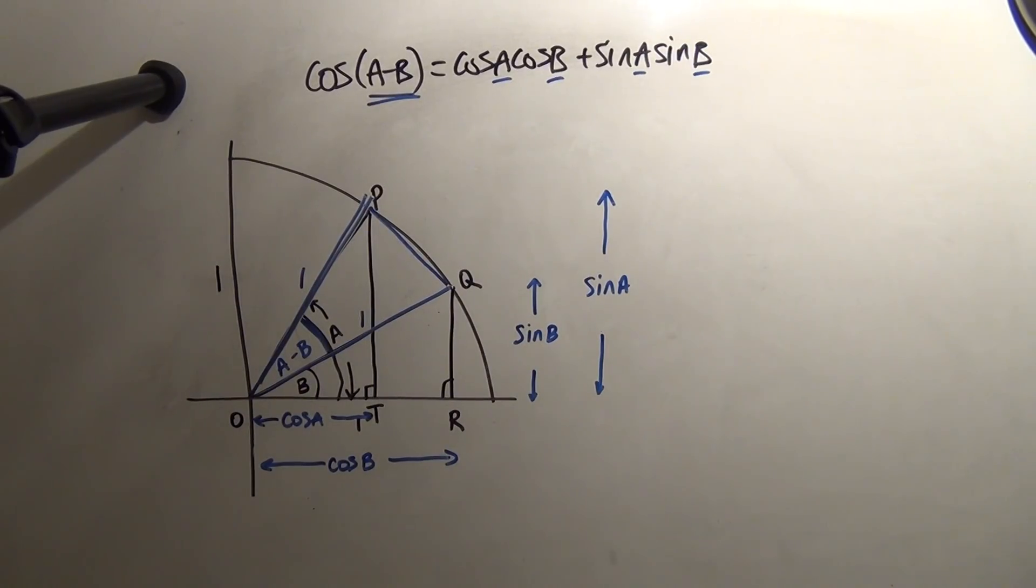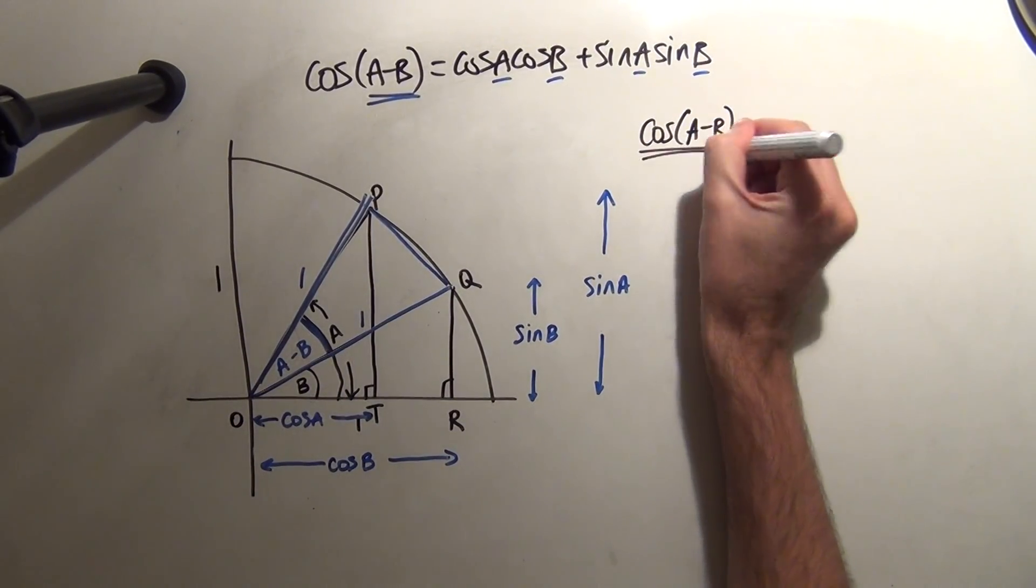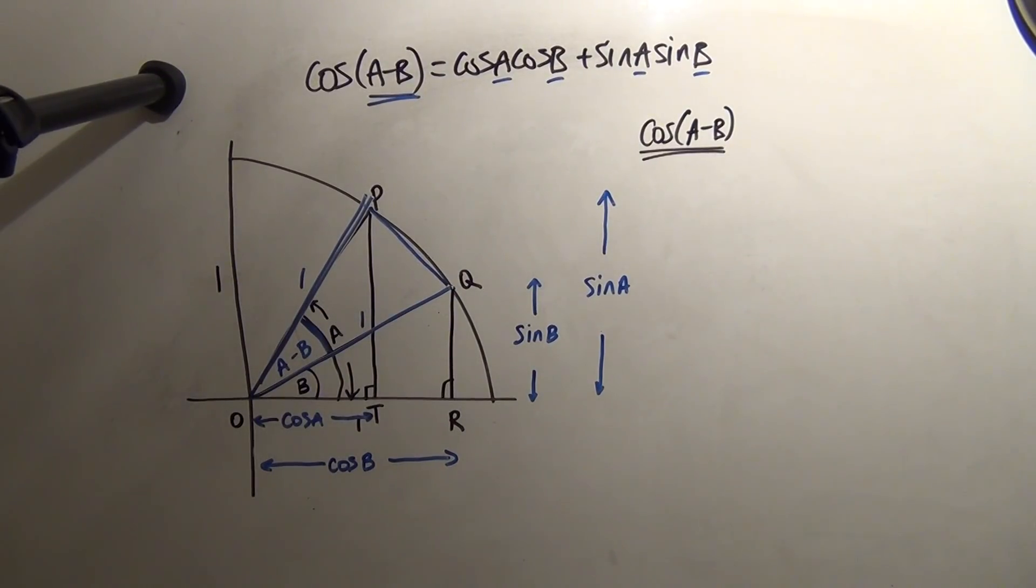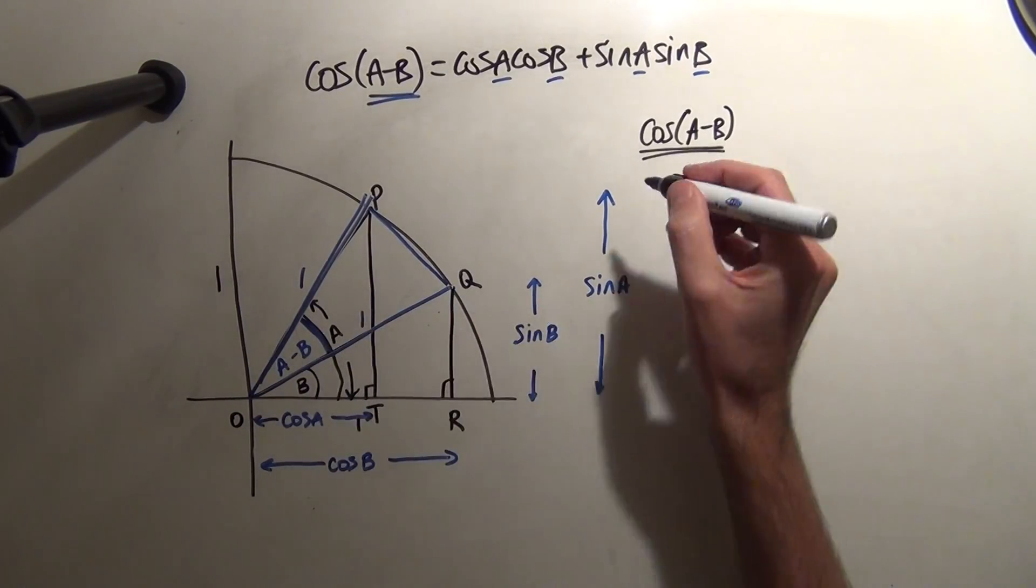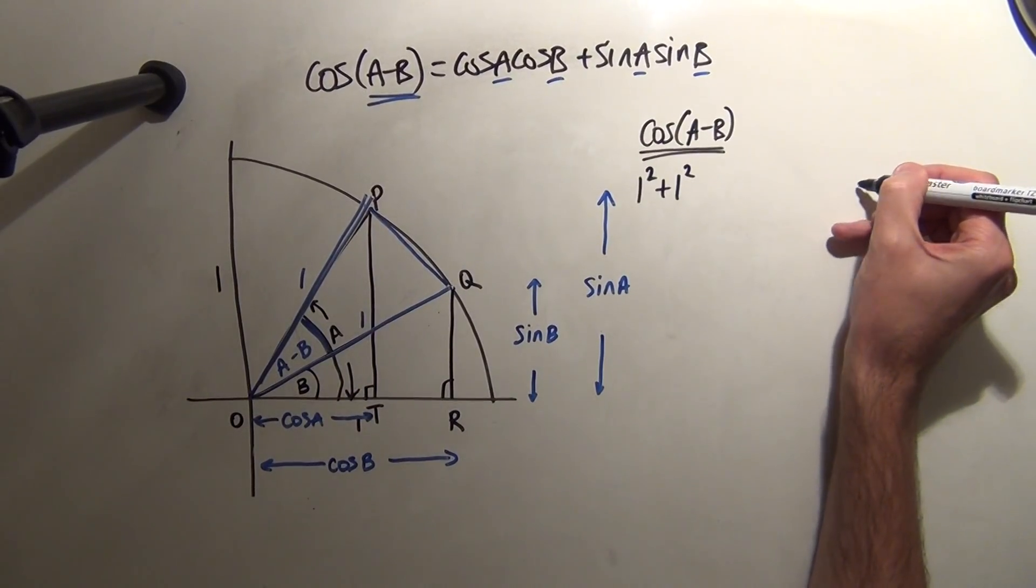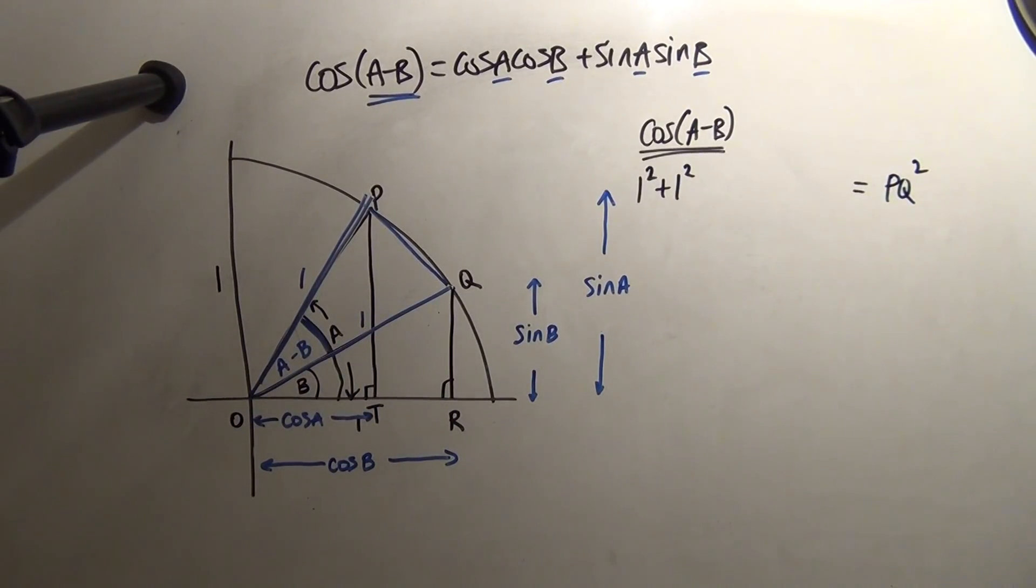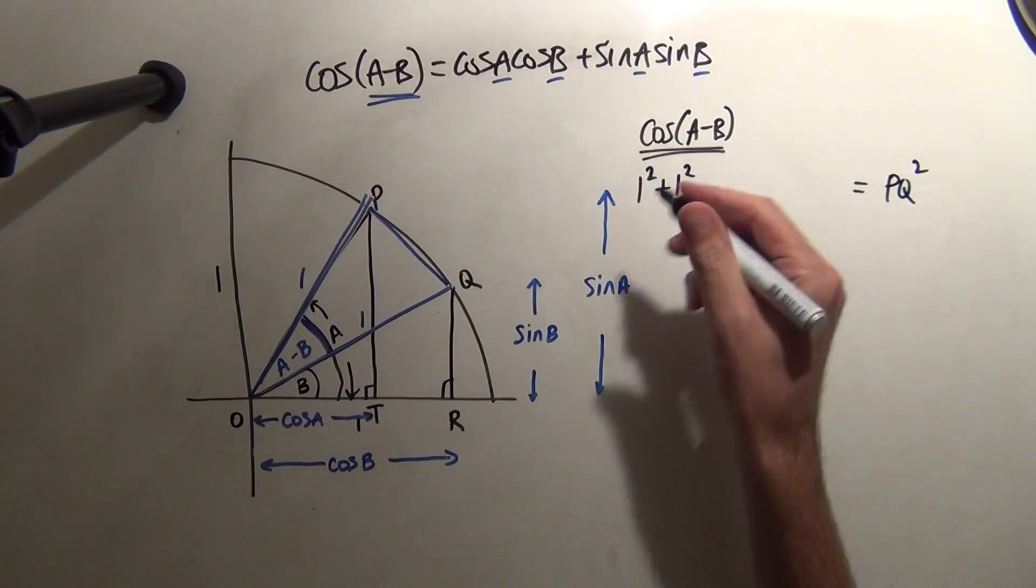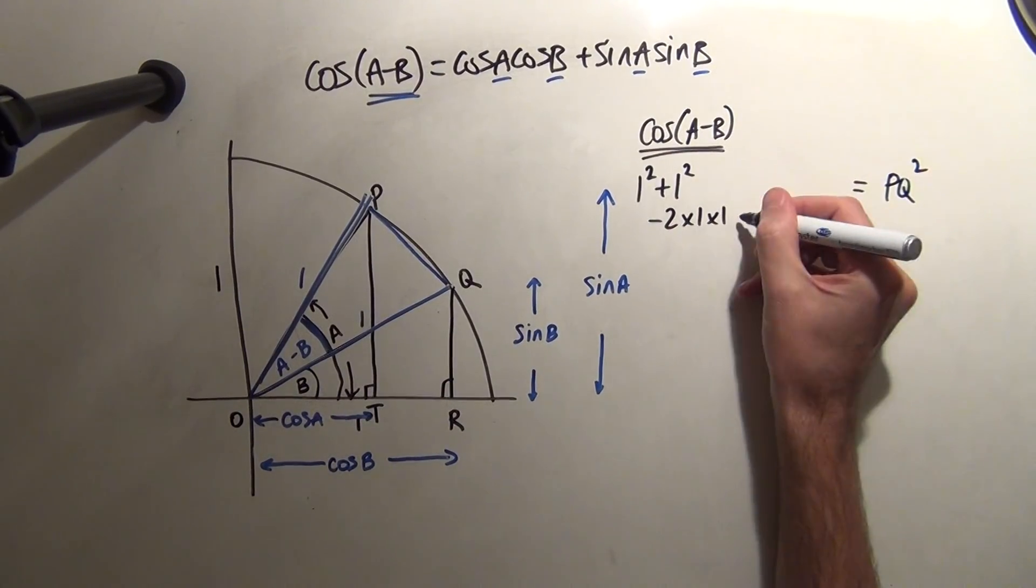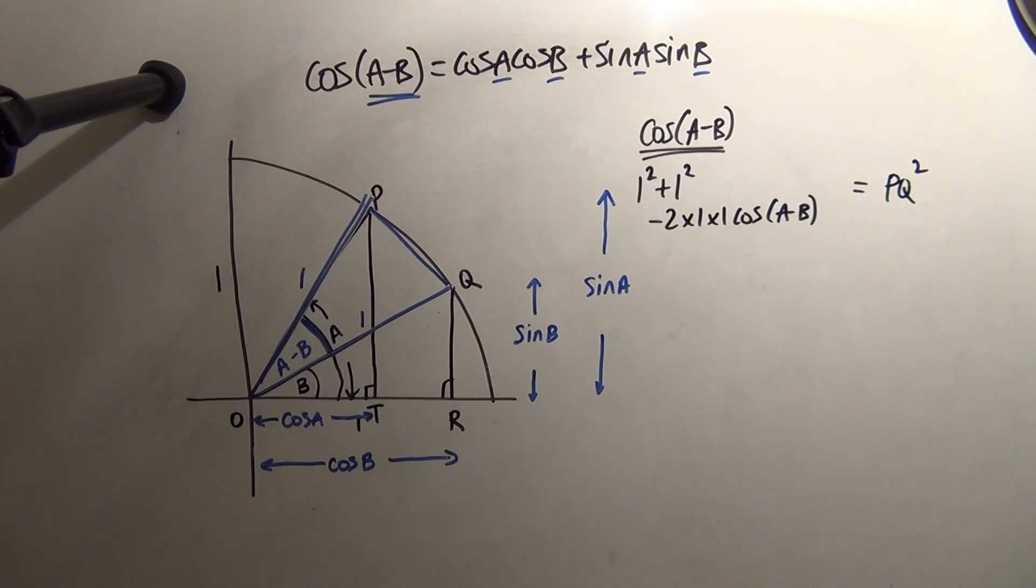So, the cosine of A-B in triangle O, P, Q. There's many ways of looking at the cosine rule. I prefer to look at Pythagoras first, and think if that was a right angle, then I'd have 1 squared plus 1 squared would be equal to PQ squared. But it's not a right angle, so I've got to take away 2 times 1 times 1, the cosine of A minus B away. That's just how I remember the cosine rule.